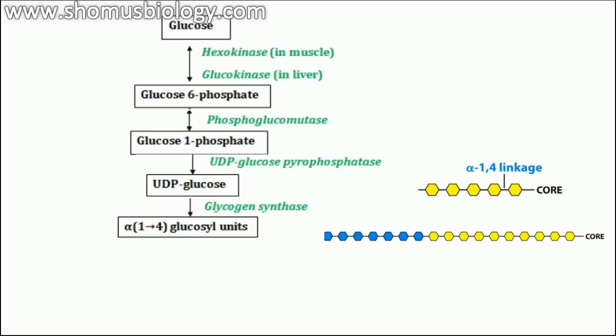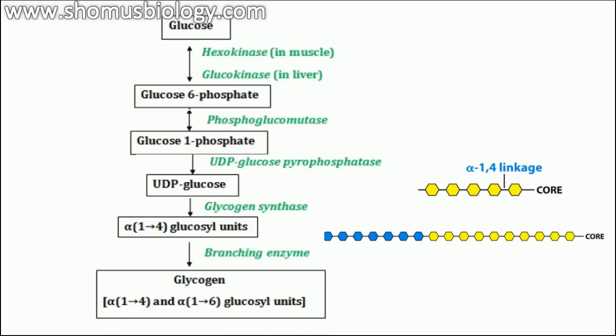The final part is branching. A separate enzyme known as the glycogen branching enzyme adds alpha-1,6 glycosidic bonds to create different branches from the linear glycogen chain. This is how the complete, highly branched glycogen molecule is formed.